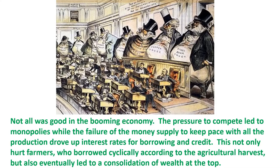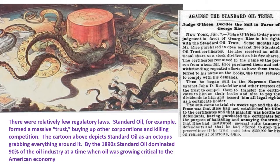Not all was good in the booming economy. The pressure to compete led to monopolies, while the failure of the money supply to keep pace with all the production drove up interest rates for borrowing and credit. This not only hurt farmers who borrowed cyclically according to the agricultural harvest, but also eventually led to a consolidation of wealth at the top. There were relatively few regulatory laws. Standard Oil, for example, formed a massive trust, buying up other corporations and in effect killing competition — a cartoon depicts Standard Oil as an octopus grabbing everything around it.